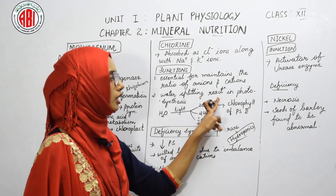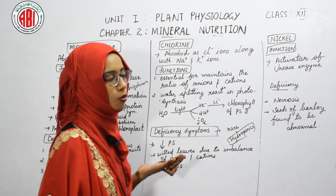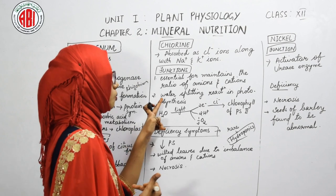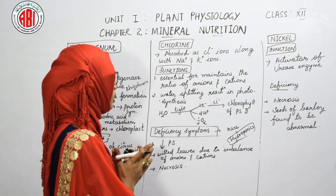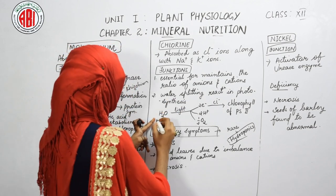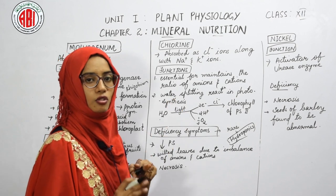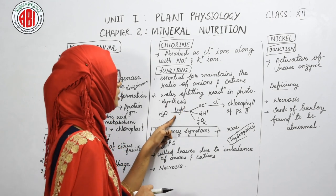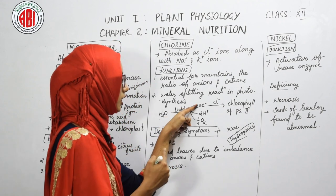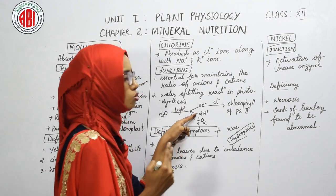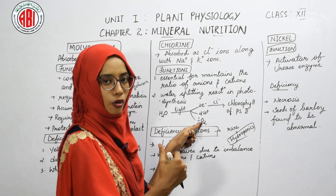Chlorine also helps in the water-splitting reaction, called photolysis. Photosynthesis involves two types of reactions: light reactions and dark reactions. During the light reaction, in the presence of light, water is split to produce two electrons, two protons, and one molecule of oxygen. The oxygen is a by-product of this reaction.